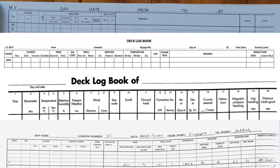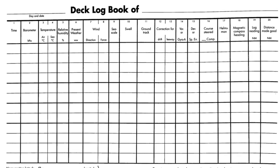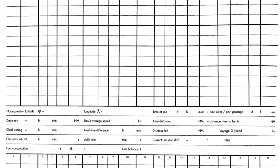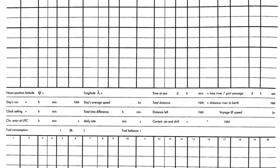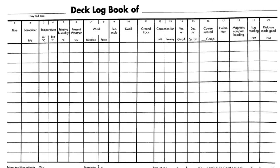Let's pick one of the different formats and get started. One part of the deck log book that every watch officer has to fill out contains information on weather conditions, ship's course, distances, and nautical remarks. This is the part we will cover in this video. The other part concerning noon information is usually filled out by the second officer. On each page you need to fill in the current day and date, the name of the ship, as well as the voyage number and port of departure and arrival.